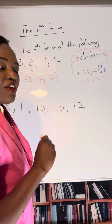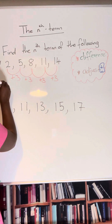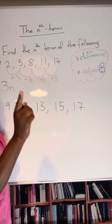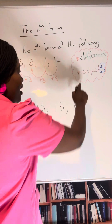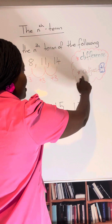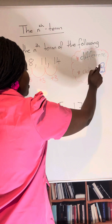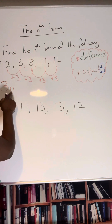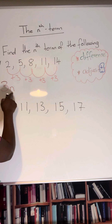So therefore your first part of the sequence is going to be 3n. Second, you need to adjust — you need to either add or subtract to get to the first term. So if your first term was 1, this will be 3 times 1.